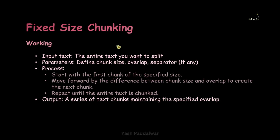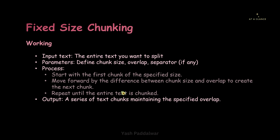As an output you will get a series of text chunks maintaining the specified overlap — basically chunks of fixed size along with the mentioned overlaps just to ensure the continuity or the semantics between the chunks. So I hope the working of fixed size chunking is very clear. Now let's practically implement fixed size chunking with the help of the CharacterTextSplitter from LangChain and see how this works in detail with an example.